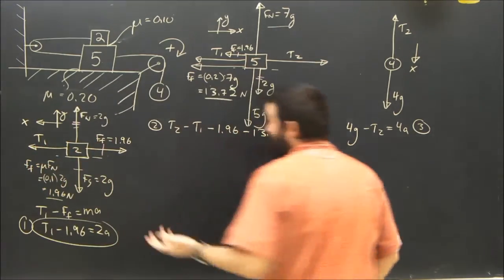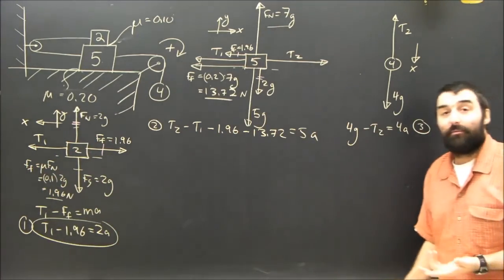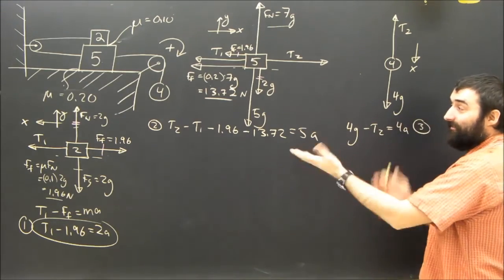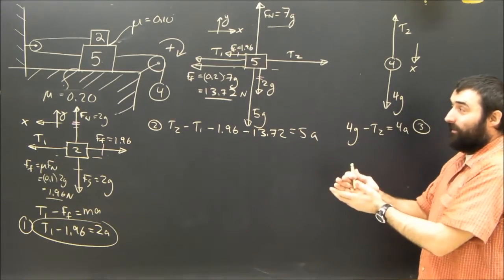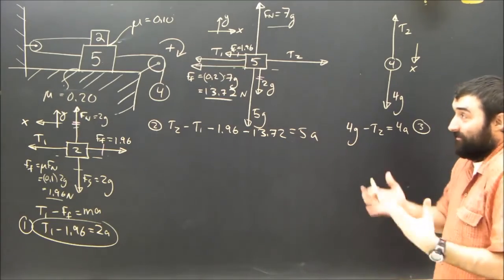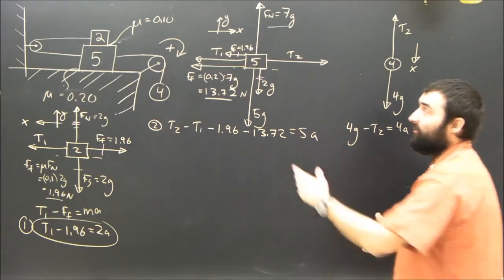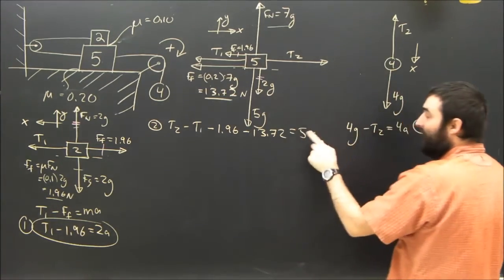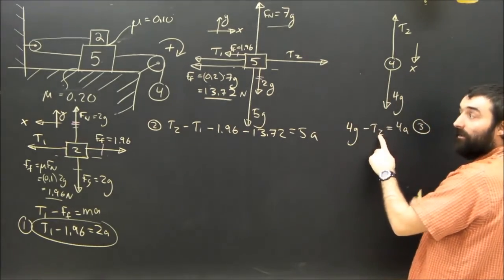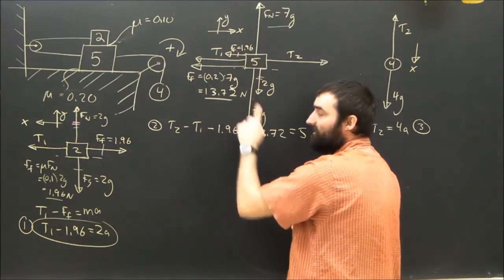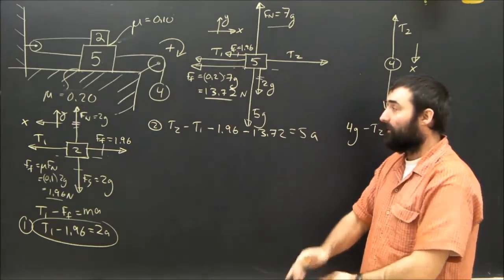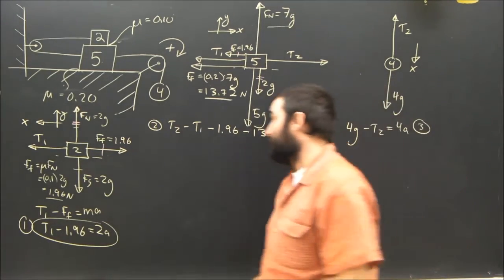So I have three equations and three unknowns. But just like always, if I add the equations, the tensions cancel out. I have a positive T2 in equation two and a negative T2 in equation three. I have a negative T1 in equation two and a positive T1 in equation one. Adding all three equations, all the T's cancel out.